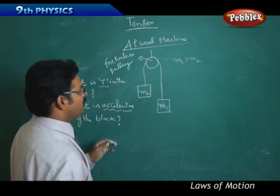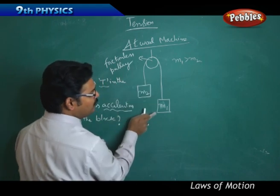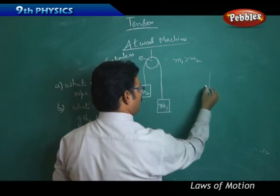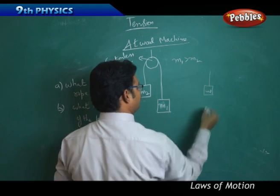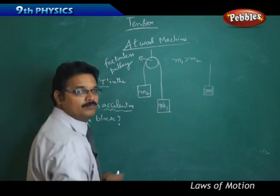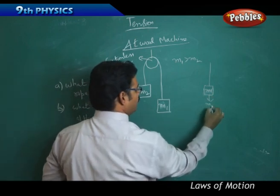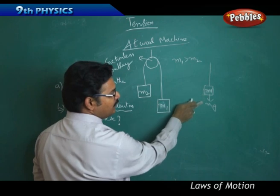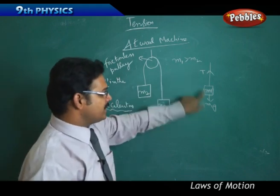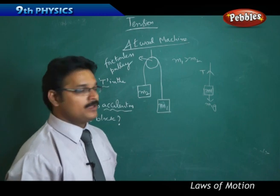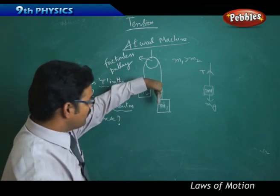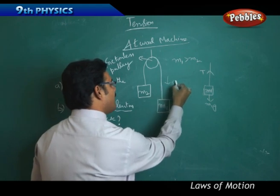Consider the rope connected to mass M1. I will take this part only. For mass M1, there is weight M1×g acting downward, and acting opposite in the rope is tension T. Two forces — tension and M1×g — act on this system. Since M1 is greater than M2, M1 is moving downward and therefore has acceleration downward.